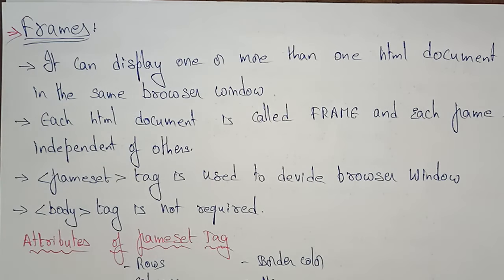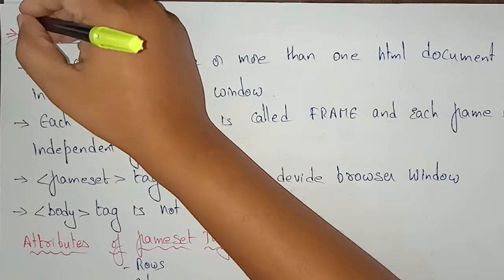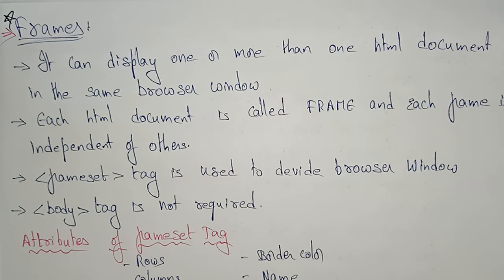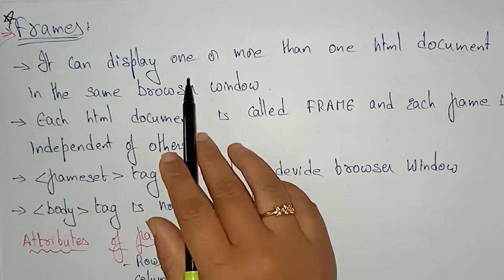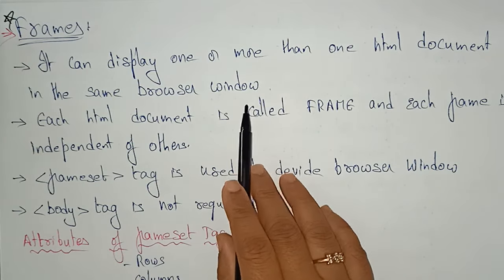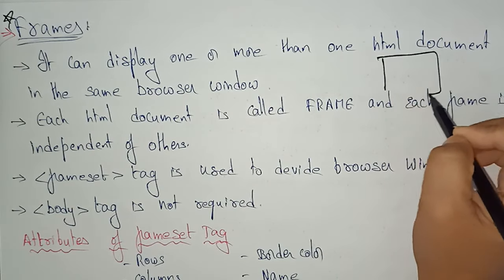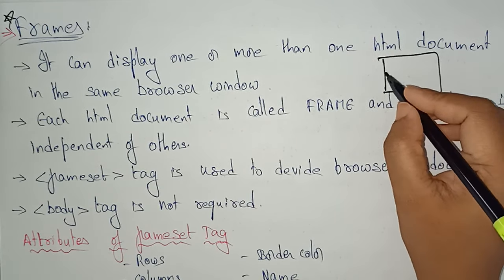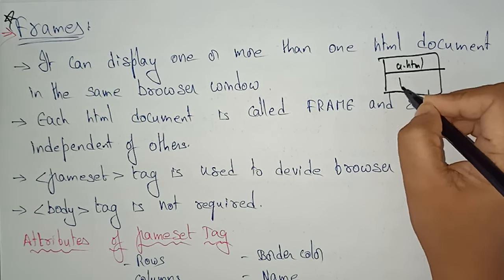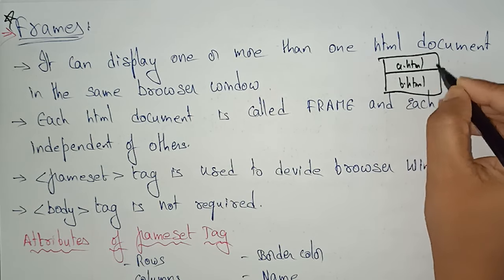Welcome back. Let's continue with HTML tags — the next type of tags are frames. This is one important concept: frames divide your browser. Frames can display one or more than one HTML document in the same browser window. So in one browser window you can call a.html and b.html instead of using separate browsers.